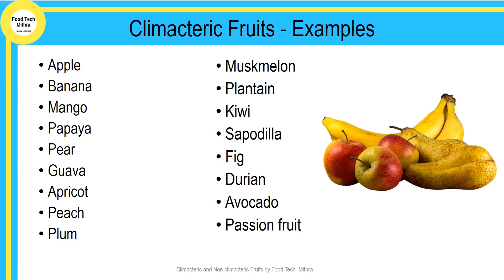Some of the examples of climacteric fruits are apple, banana, mango, papaya, apricot, peach, plum, avocado, sapodilla, kiwi, etc.